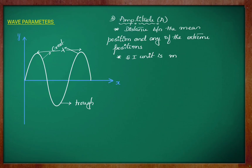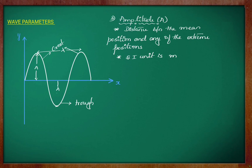Amplitude is the distance between the mean position and any of the extreme positions. It is represented by A. The direction of the wave along the x-axis is the mean position and the crest or trough is the extreme position. The distance between the mean position and the extreme position in any direction gives us amplitude. The SI unit of amplitude is meter.